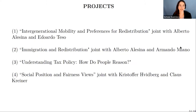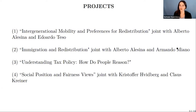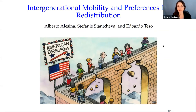The projects I want to tell you about today — each will be relatively brief. The first is on intergenerational mobility and preferences for redistribution, joint with my great colleague Alberto Alesina, who very sadly passed away this year, and Eduardo Teso at Northwestern Kellogg. The second is on immigration and redistribution with Alberto and grad student Armando Miano. The third is just by myself on understanding tax policy. The fourth is with Christopher Hudberg and Claus Kreiner from the University of Copenhagen on social position and fairness views.